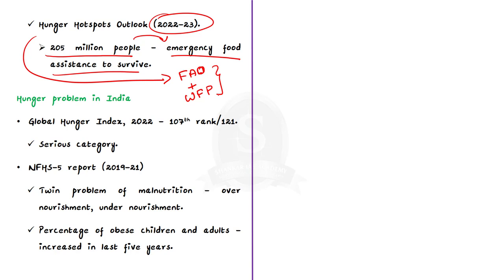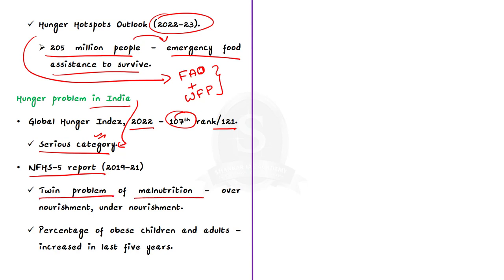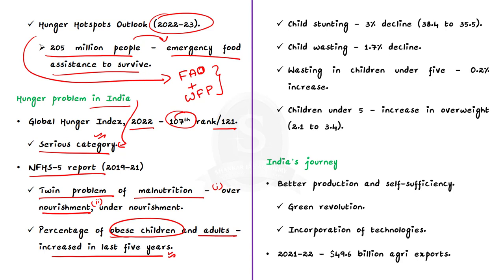Coming to the hunger problem in India, the Global Hunger Index 2022 ranked India 107th out of 121 countries evaluated, performing poorly compared to its South Asian counterparts and neighbors. India is categorized in the 'serious' level of hunger. The National Family Health Survey 5 report reveals a twin problem of malnutrition in India — people are both getting overnourished and undernourished. The percentage of obese children and adults rose in India over the last five years, while several nutritional indicators have shown only minor improvements since NFHS-4, conducted in 2015-16.